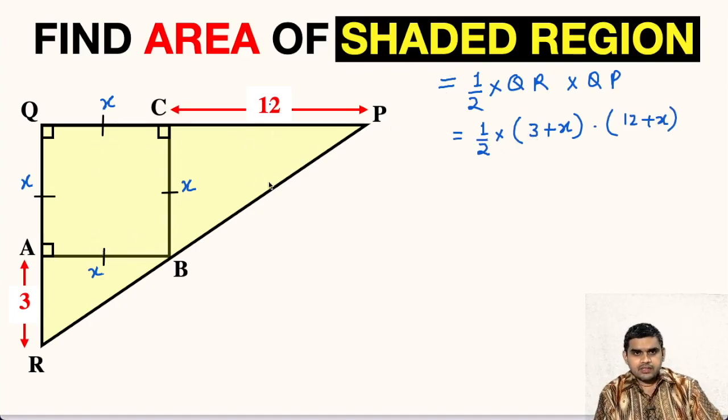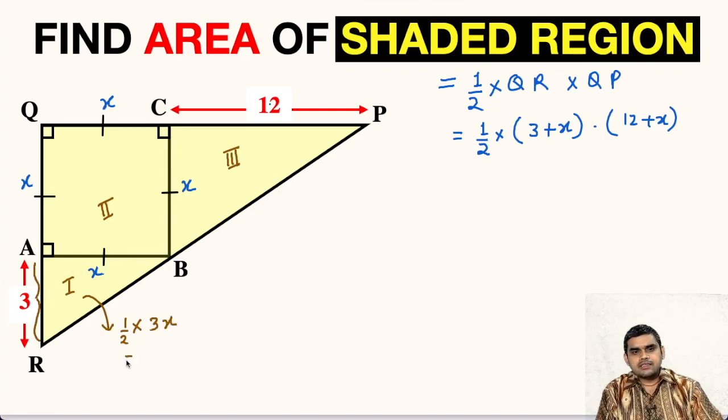Now from the figure, we can see that this triangle PQR can be divided into three sub areas. This is the first area and this area is given by half times, because it is the right triangle. Let us take this as base 3 times X. So this will be 3X upon 2 square units.